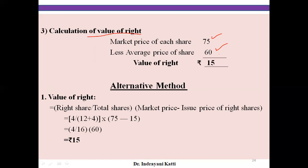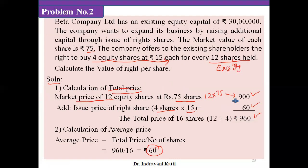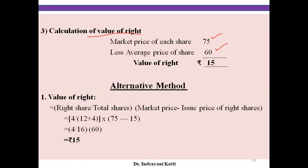Market price of each share is Rs.75 as given in the problem. Average price calculated in Step 2 is Rs.60. So 75 minus 60 equals Rs.15. The value of right share is Rs.15. The solution is complete.